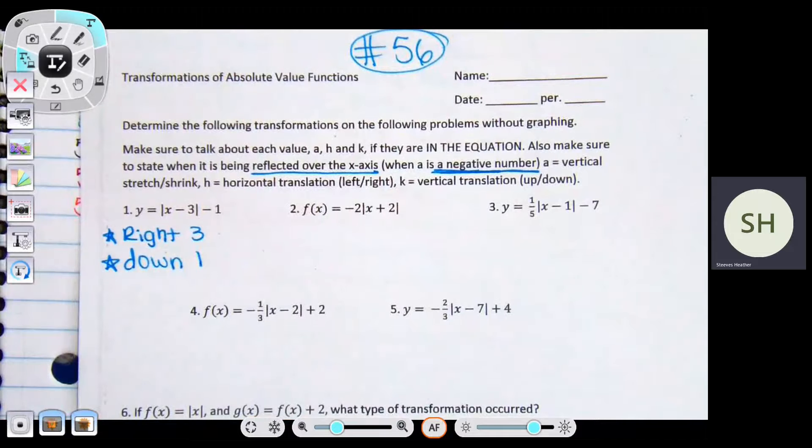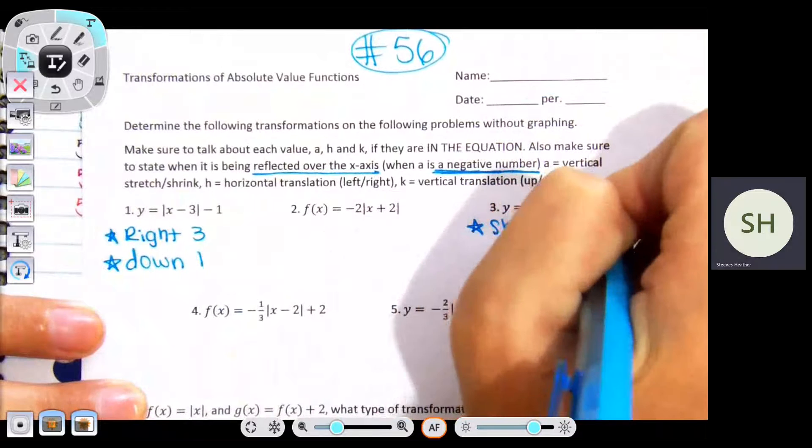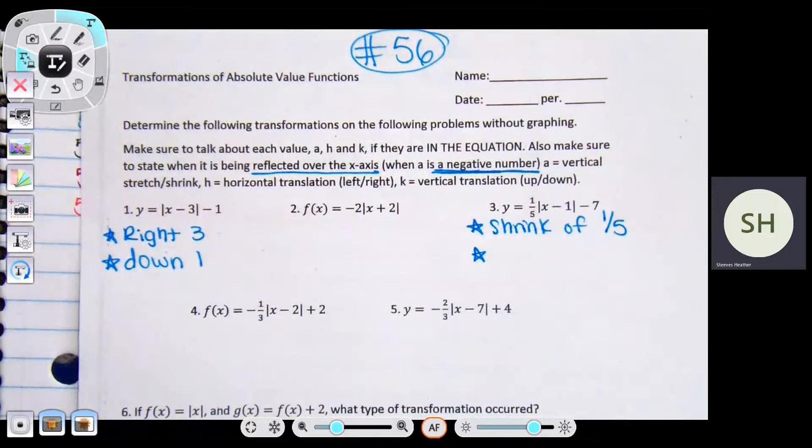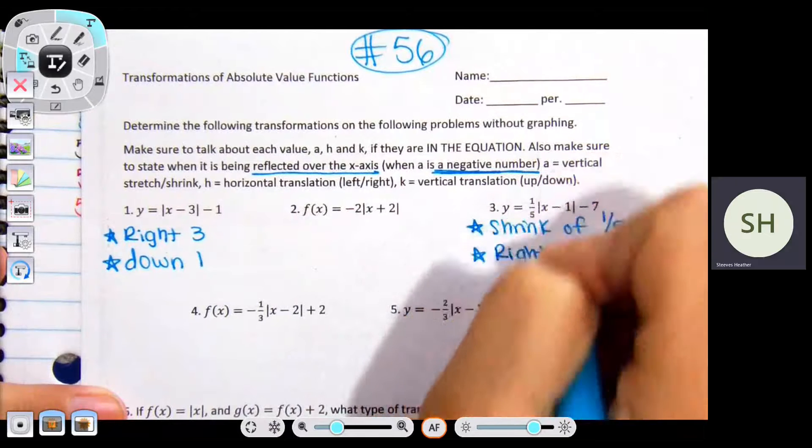Let's skip number two, go to three. There's three numbers, so we have three things we need to say. What's the a tell me? If I'm talking about the transformation, I'm talking about if it's a shrink or stretch. So is this a shrink or stretch if it's a fraction? It's a shrink of one-fifth. The next number is that one, so right one, it's opposite of the brackets. And down seven.